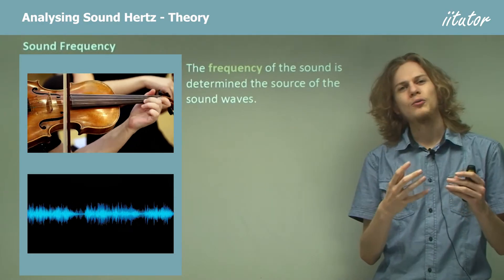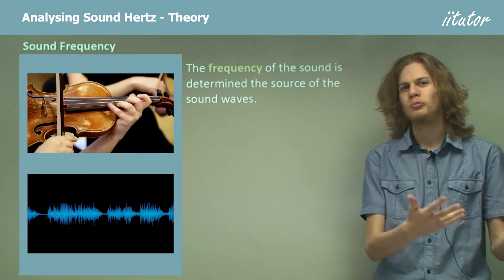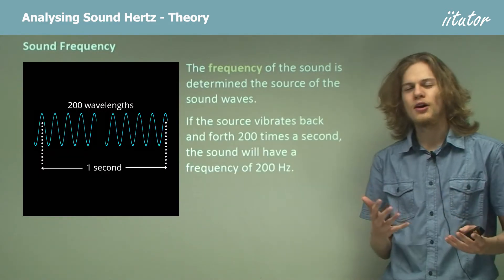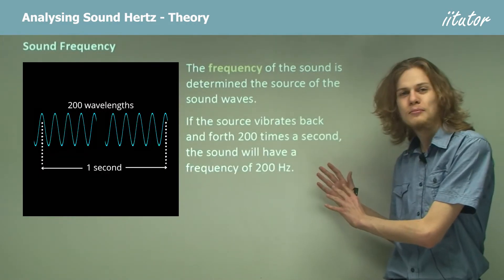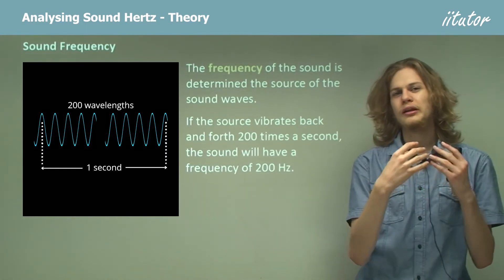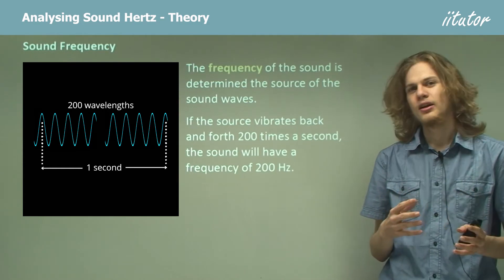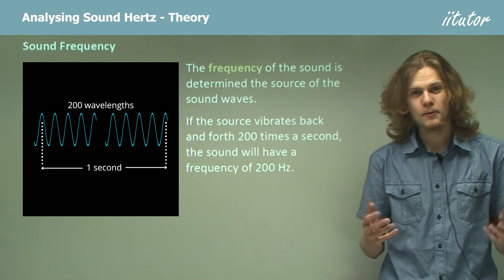If the source vibrates back and forth 200 times a second, then that means that the wave will have 200 complete waveforms or 200 complete wavelengths every second. And of course, when we're talking about sound or any wave, that means it travels at 200 hertz.